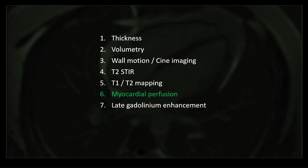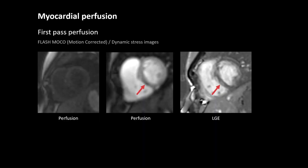Now coming to myocardial perfusion. Perfusion images are obtained as FLASH MOCO or motion-corrected images. First the contrast enters the right ventricle, then the left ventricle, then the entire myocardium enhances. You should look out for any non-enhancing areas, as these could represent scar or infarct. On LGE imaging, enhancement in the same region is again suggestive of infarct or scar.